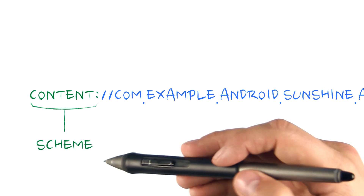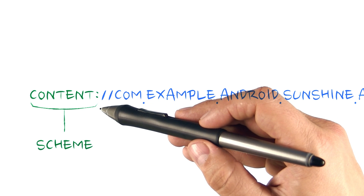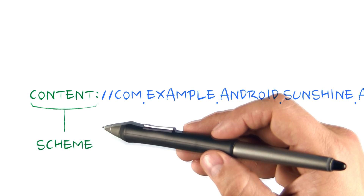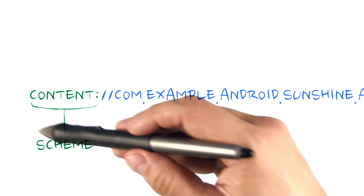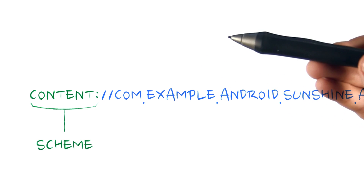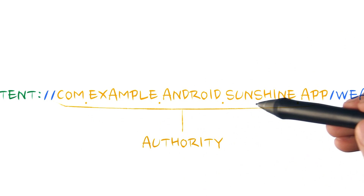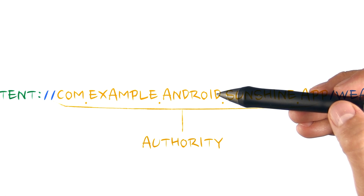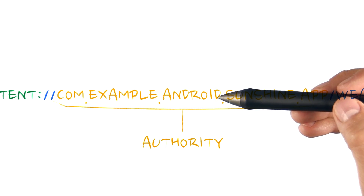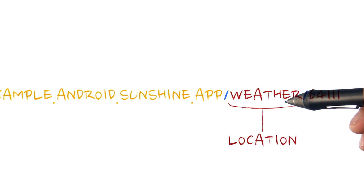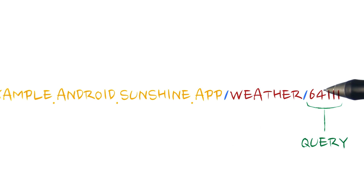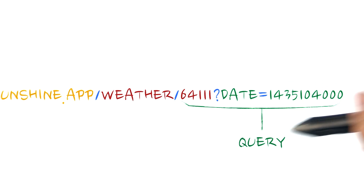Each URI can contain the content scheme. A scheme is the first part of a URI that precedes the colon, and it identifies the protocol that the URI will be using. You are used to seeing schemes such as HTTP and FTP in URIs. 'Content:' implies that the URI refers to a content provider. A content authority is a unique string used to locate your content provider, and it should almost always be the package name of the application. A location typically points to a database table within the application. An optional query can either be part of the URI path, or take the form of a traditional URI query following a question mark.